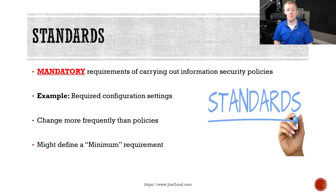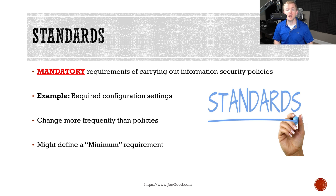Standards, like policies, are mandatory and describe the way an organization is going to carry out its information security policies. For example, you might call out specific configuration settings for an operating system or a specific technology stack to use. Standards are much more likely to change in an organization than a policy and can change much more frequently. Standards can also be used as minimum requirements — for example, a standard might say you have to implement at least Windows 10, but it could be something newer.